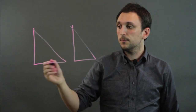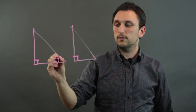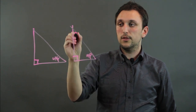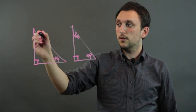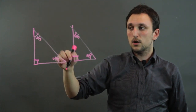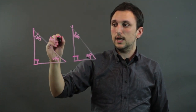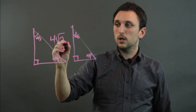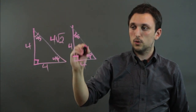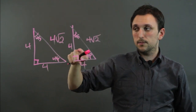So let's pretend these are the same size. If this is 90 and this is 90, and this is 45 and this is 45, and this is 45 and this is 45 — these could be similar — but if this is 4√2, and this is 4 and this is 4, and this is 4, 4, and 4√2, then they're congruent.